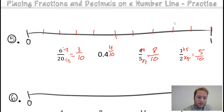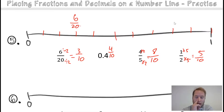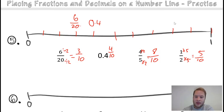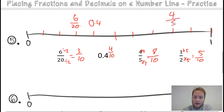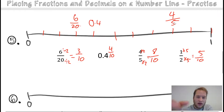At my third mark is six twentieths. At my fourth mark we've got zero point four. At my four fifths mark, that's at eight — four fifths. And then at my half mark: five tenths, so it's a half.